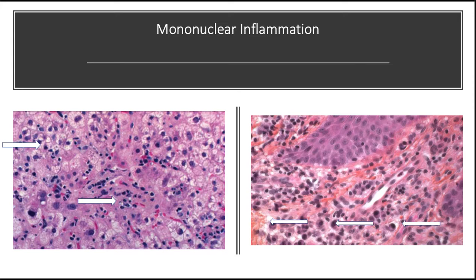Lymphocytes predominate in hepatitis B virus infection, as shown by the arrows in the left picture. Plasma cells are common in the primary and secondary lesions of syphilis. The presence of these lymphoid cells reflects cell-mediated immune responses against the pathogen or pathogen-infected cells.